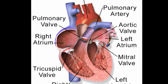There's a valve right there, and then there's one right under there. The tricuspid goes into the right ventricle, and then the pulmonary valve leaves it, and that goes into the pulmonary artery. And then the mitral valve, sometimes called the bicuspid, goes into the left ventricle, and then the aortic valve goes into the aorta.